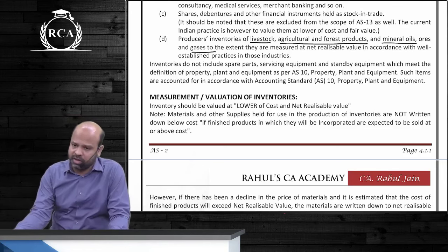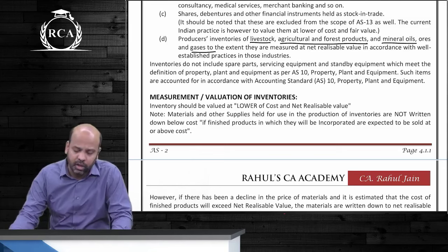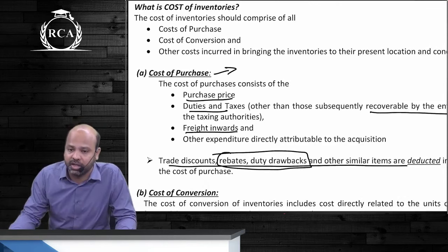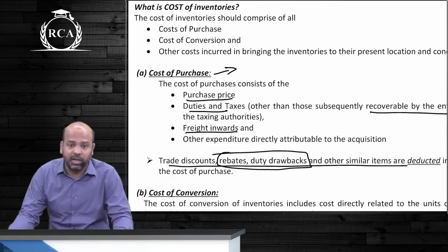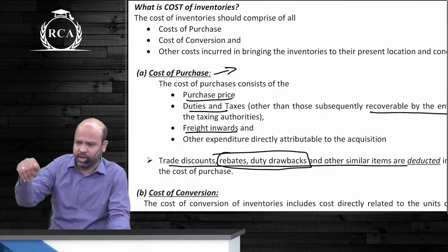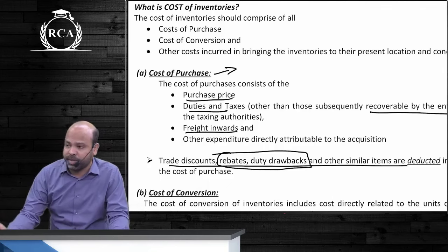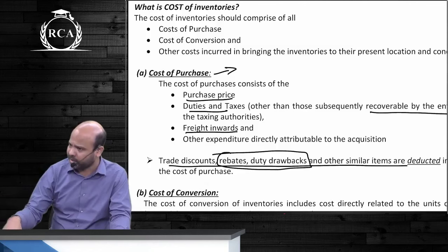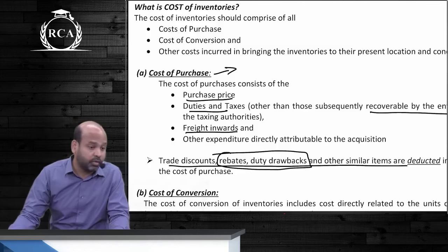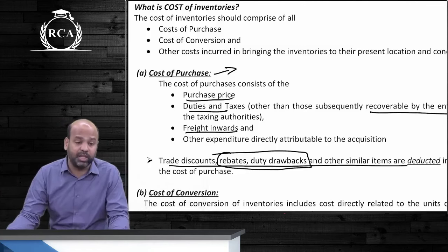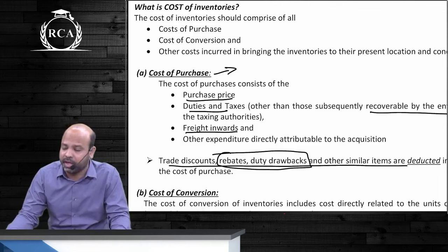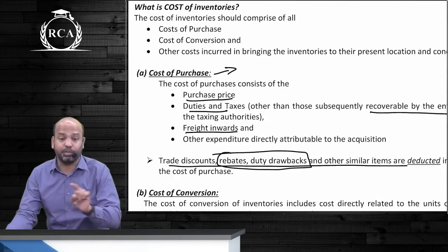Cost of inventories is segregated into three things: purchase price, cost of conversion, and other costs incurred in bringing inventories to their present location and condition. Purchase price includes the basic price, non-refundable duties and taxes, freight inwards, unloading charges, and any expenditure directly attributable to bringing inventories to their present location. Trade discounts and volume rebates should always be adjusted from the purchase price. Cash discounts will not be adjusted from purchase price — they are separately transferred to the P&L account as income.